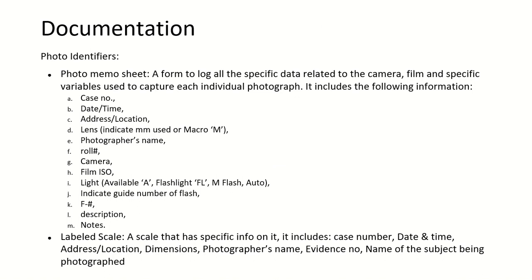Documentation of photographs involves photo identifiers, which are the photo memo sheet. The memo sheet is a form to log all the specific data related to the camera, film, and other variables of photographs, which includes: case number, date and time, address location, lens, photographer's name, role, camera, ISO, light, guide number of flash, f-stop, description, and notes.